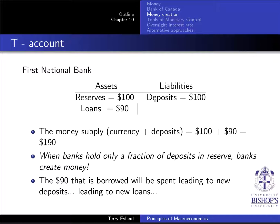In this fractional reserve system, let's say the bank thinks only ten dollars will be pulled out at any given time, so they take the extra ninety dollars and make a loan. Because of this, you have the initial hundred dollars deposited, and the bank creates ninety dollars — that's the bank creating money. And that money is borrowed and spent somewhere.